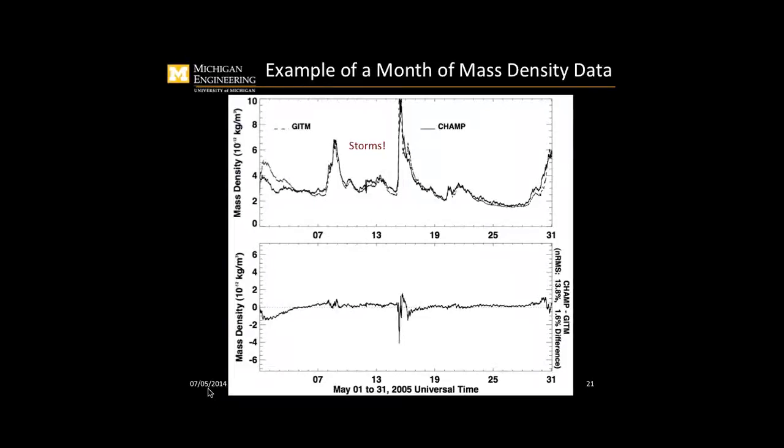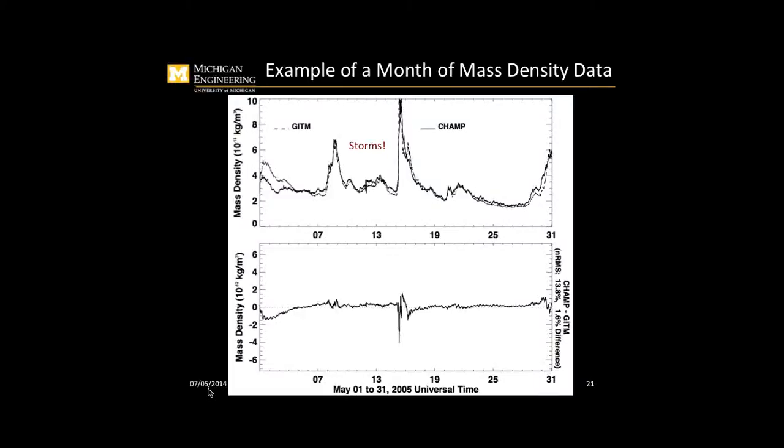This is an example of a storm here. This shows mass density as a function of time. You can see the mass density actually increases by a factor of 3 here and by a factor of about 5 there. The mass density increases very rapidly, and then it descends gradually over time. So you have to take this into account when you're doing propagation. So there's the summary. It basically just says that we're working on modeling the thermosphere, and we're trying to do that to help our mission, our Cygnus mission, to not have collisions and to put them into the right locations in their constellation.